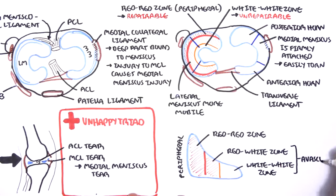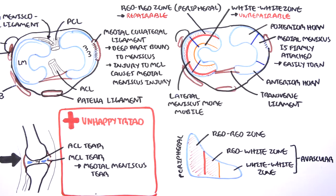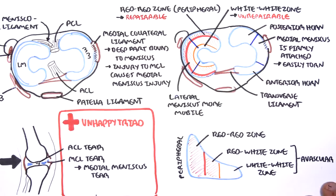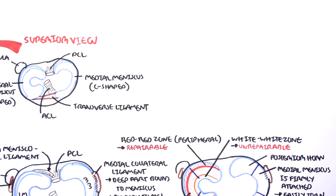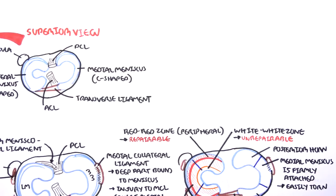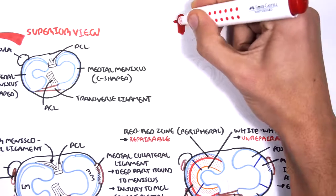The red white zone and the white white zone is classified as avascular. Damage to this part of the meniscus means that repairing it is meaningless, and so removal would be the best option if patients are symptomatic. What I mean by this is if the damage causes pain.